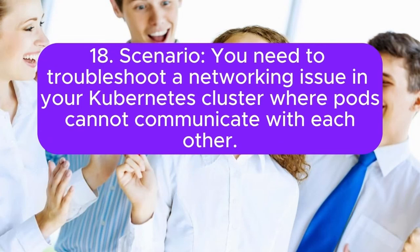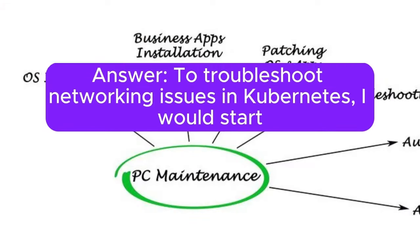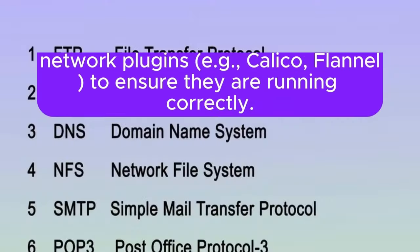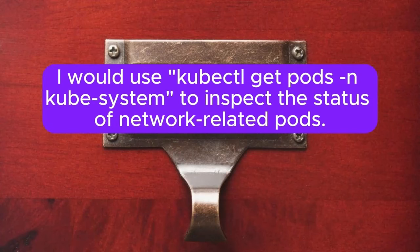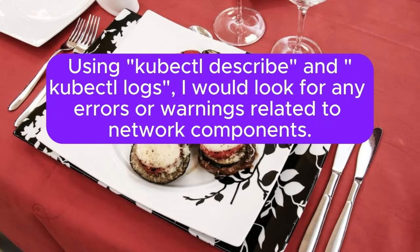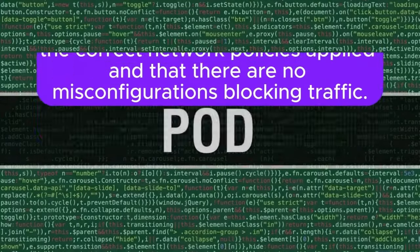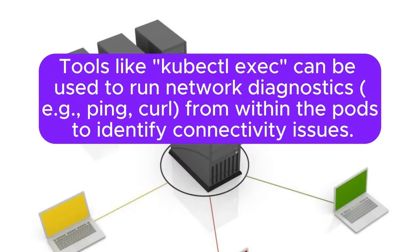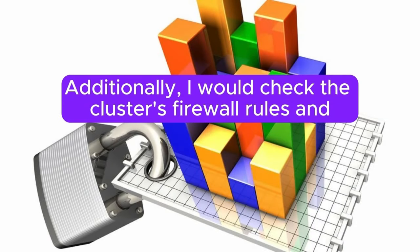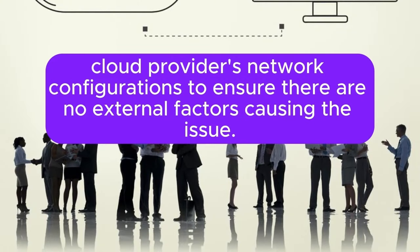Scenario 18: You need to troubleshoot a networking issue in your Kubernetes cluster where pods cannot communicate with each other. How would you diagnose and resolve the issue? Answer: To troubleshoot networking issues, I would start by checking the status of the network plugins, for example Calico or Flannel, to ensure they are running correctly. I would use kubectl get pods -n kube-system to inspect the status of network-related pods. Using kubectl describe and kubectl logs, I would look for errors or warnings related to network components. I would verify that pods have the correct network policies applied, and use kubectl exec to run network diagnostics like ping or curl from within pods. I would also check cluster firewall rules and cloud provider network configurations.